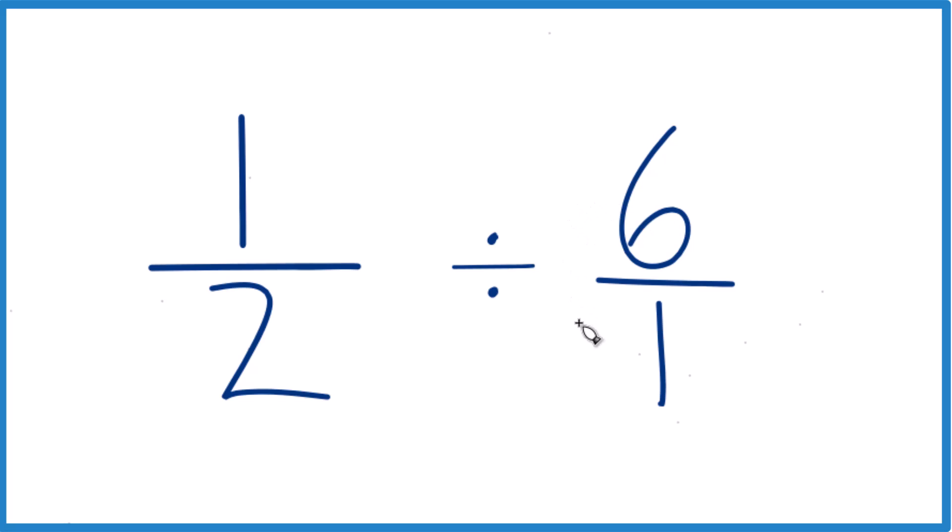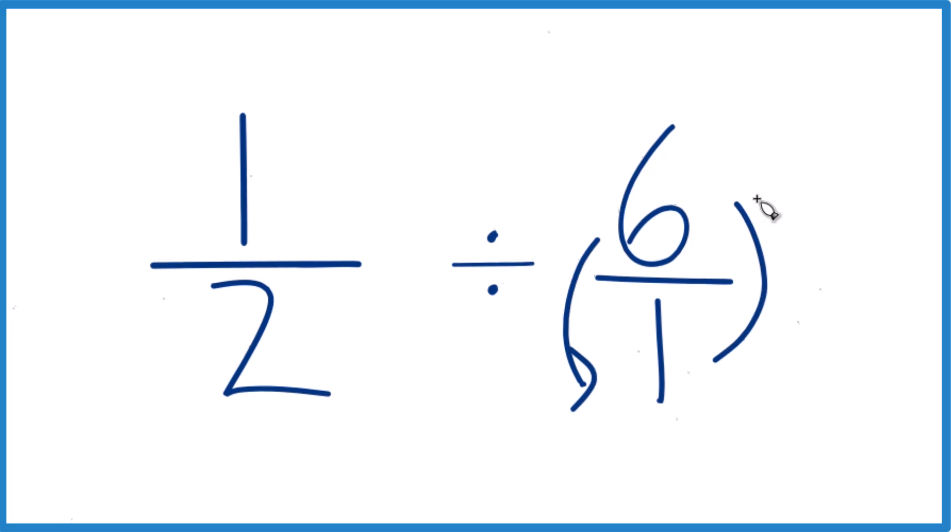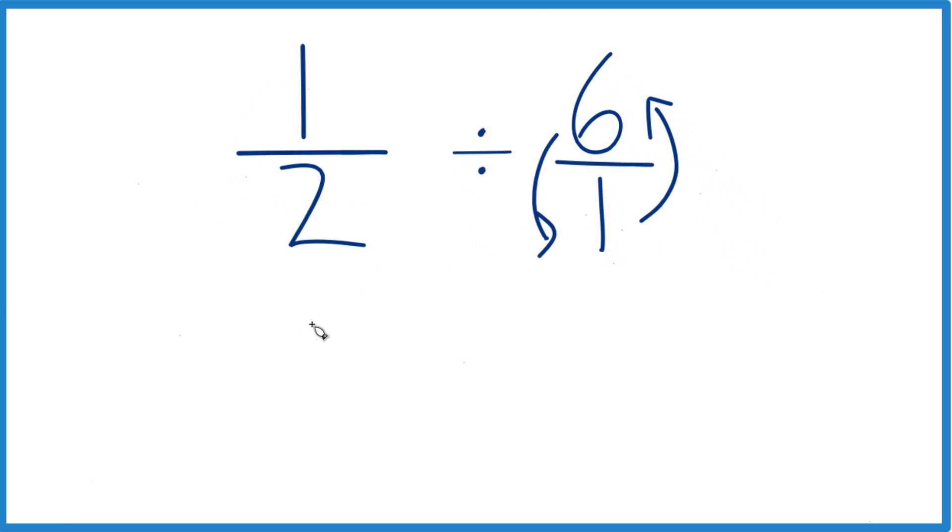We probably should get a fraction as our answer. So what we do now is take the reciprocal here, move the six down and the one up. Because when we do that, we have one-half not divided by, but times this reciprocal.